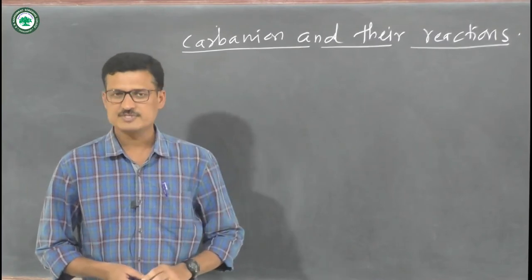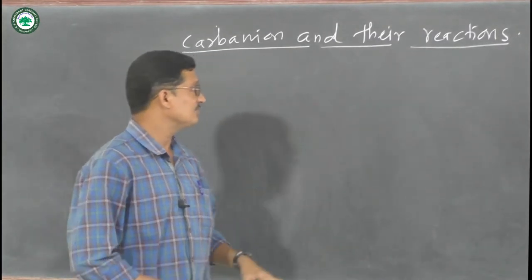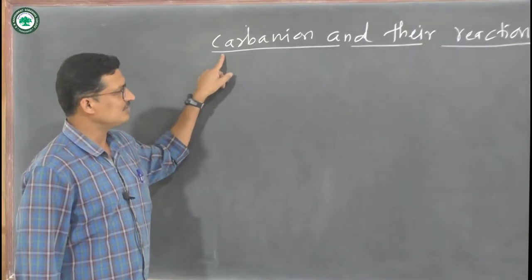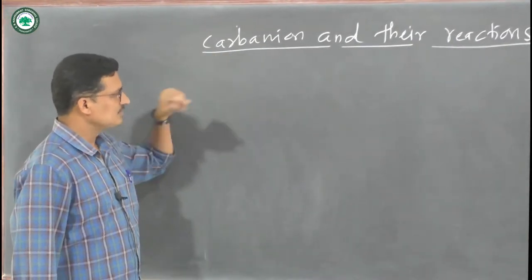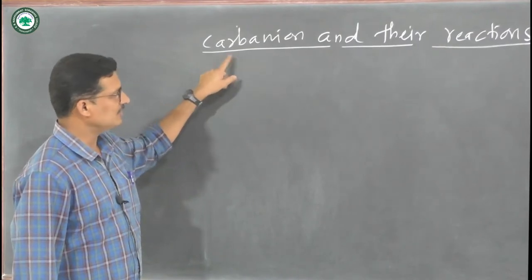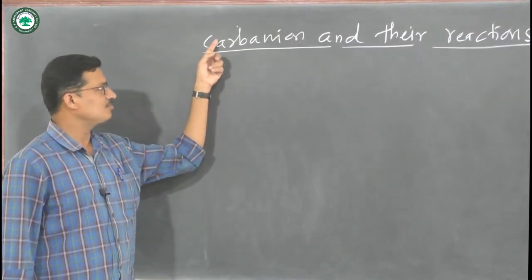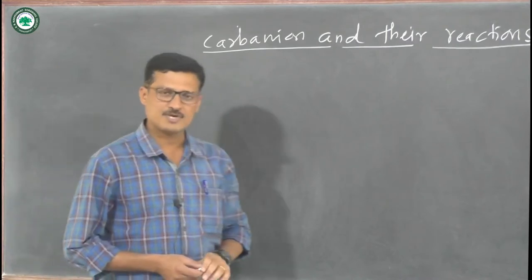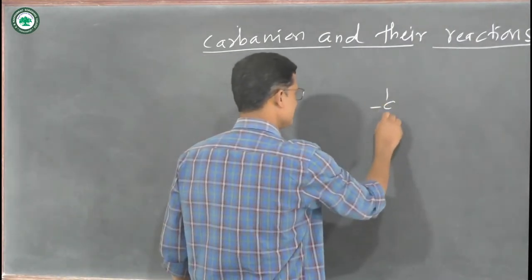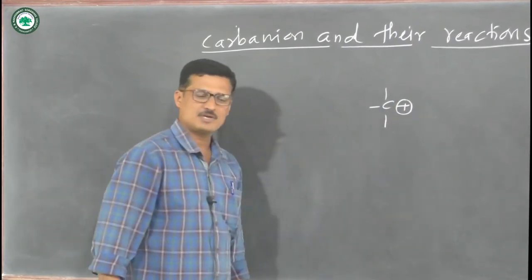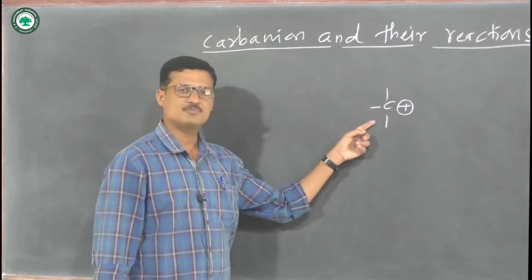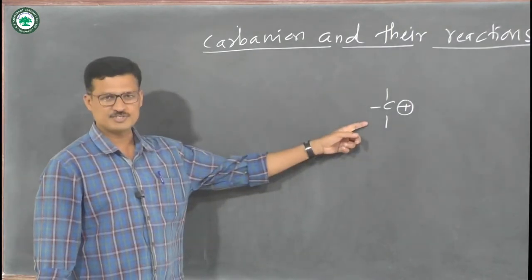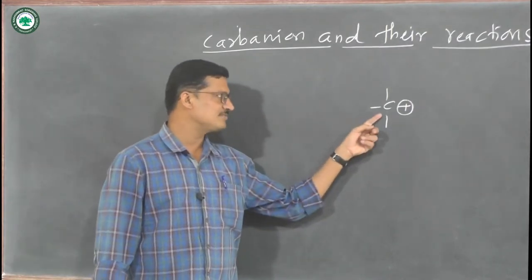Students, today we are going to discuss the next chapter — chapter number one in the third semester — that is carbanions and their reactions. First, let's think about what is meant by a carbanion. Before that, recall what is meant by a carbocation. Last semester we already discussed: suppose this is a carbon, and carbon with a positive charge is nothing but a carbocation. We already know how carbocation formation takes place — it is an electron-deficient species.